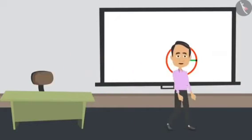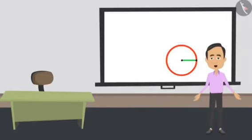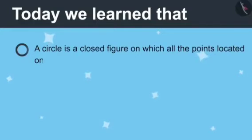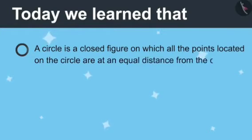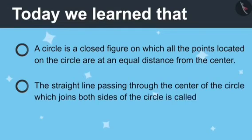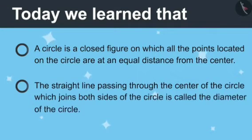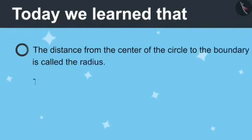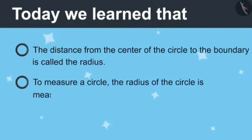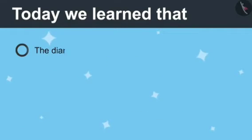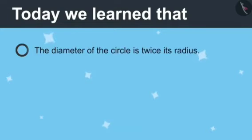Now you have understood how to measure a circle, so now you can measure the wheels you were asking about. Today we learned: a circle is a closed figure in which all the points are at the same distance from the centre. The straight line passing through the centre of the circle which meets both sides of the circle is called the diameter of the circle. The distance from the centre of the circle to the boundary is called radius. To measure a circle, the radius of the circle is measured. The radius of a circle is half its diameter. The diameter of a circle is twice its radius.